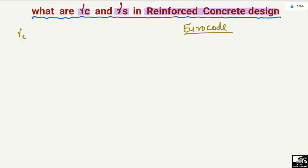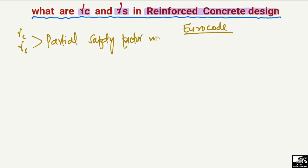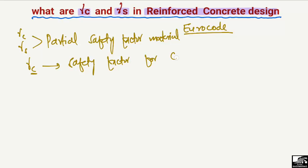Gamma_C and gamma_S are both partial safety factors for the materials. Gamma_C — where C represents concrete — is the partial safety factor for concrete. Similarly, gamma_S — where S represents steel — is the partial safety factor for the reinforcing steel.